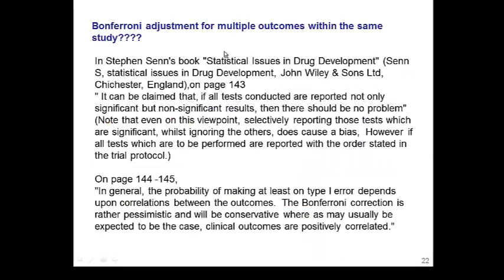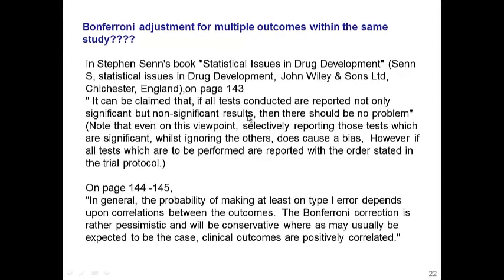We learned how to adjust for p-value or significance level for multiple comparisons, and this adjustment is highly controversial. The famous British statistician Stevenson said it can be claimed that if all tests conducted are reported — not only significant but also non-significant results — then there should be no problem. So he said it's okay not to adjust for multiplicity, as long as you show results of all hypothesis tests conducted. The problem arises when you start cherry-picking and selectively reporting only significant tests while ignoring other results, which causes bias.